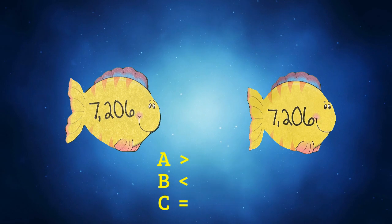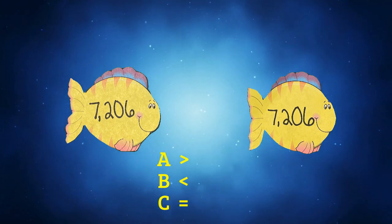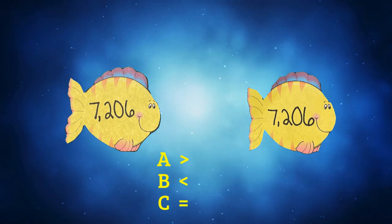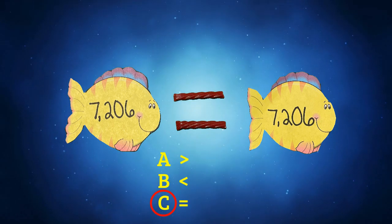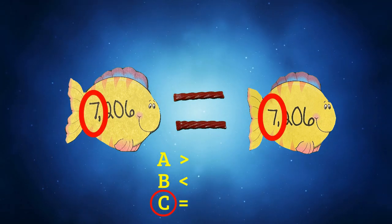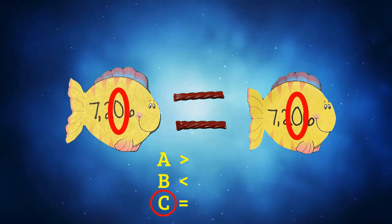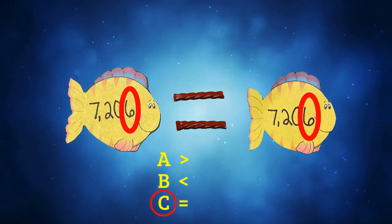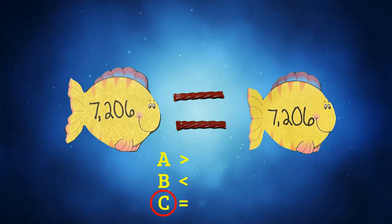Here's our next question. 7,206 is greater than, less than, or equal to 7,206. Pause the video and write down your answer. If you said that the answer is C, equal to, then you are correct. Both numbers have a seven in the thousands place, a two in the hundreds place, a zero in the tens place, and a six in the ones place. Therefore, 7,206 is equal to 7,206 because they're the same number.